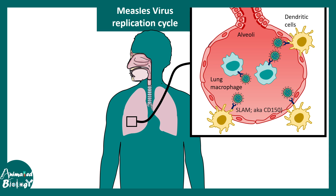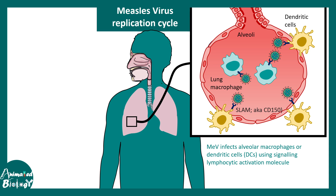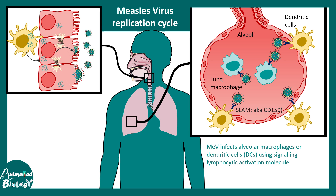Infected dendritic cells can migrate from the lungs to the upper respiratory tract, where they infect epithelial cells. In epithelial cells, viral entry occurs through a receptor known as Nectin. The virus then sheds its nucleocapsid and produces new viral particles and proteins to generate new viruses.